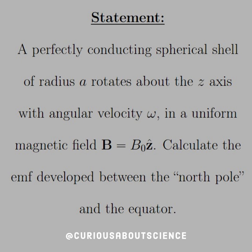The statement is: A perfectly conducting spherical shell of radius A rotates about the z-axis with angular velocity omega, in a uniform magnetic field B equal to B naught in the z-hat direction. Calculate the EMF developed between the North Pole and the equator.